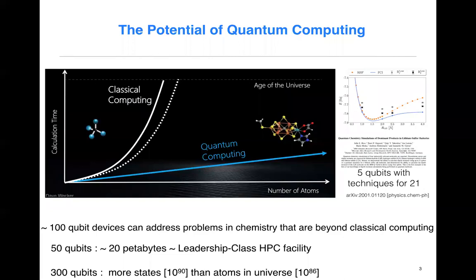So to set the scale, for instance, a 100 qubit device will be able to address problems in chemistry that are beyond classical computing. And if you look at the dimensionality of the Hilbert space with 50 qubits, then it's equivalent to about 20 petabytes, which is at scale for the largest supercomputing centers that we currently have. And with 300 qubits, the dimensionality of the Hilbert space is larger than the number of atoms in the universe.